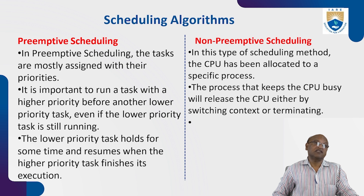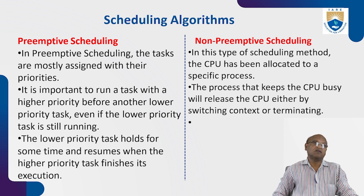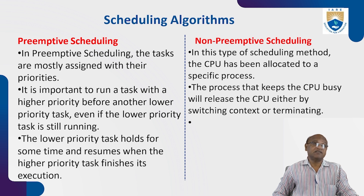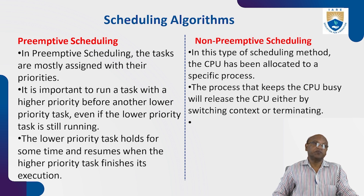In preemptive scheduling, tasks are mostly assigned with their priorities. If a high-priority task arrives while another task is running in the CPU, the present running process is forcefully stopped and the high-priority job is sent to the CPU for execution. It is important to run a task with higher priority before a low-priority task, even if the low-priority task is still running — that is called preemptive scheduling.